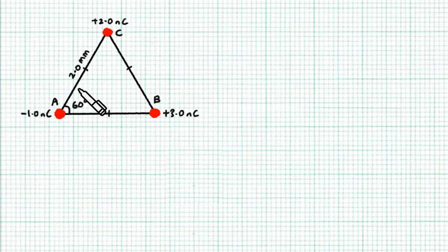We have three charges, A, B and C, sitting at the three corners of an equilateral triangle. And the length of the equilateral triangle is 2 mm.